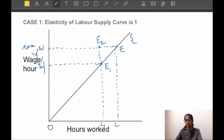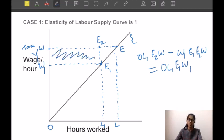So the total wages that he got from the employer was OL1E2W minus tax revenue that he has to pay to the government which is area equal to W1E1E2W. Hence this area W1E2W is the area that he has to pay as tax revenue to the government.